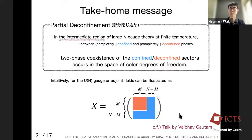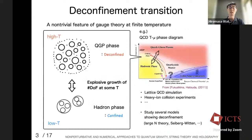As some of you may notice, this concept is very similar to what was explained in the previous BFSS talk, and that is indeed the case. It is the very same concept underlying matrix entanglement and partial deconfinement. So let's start from the confinement and deconfinement phase transition.